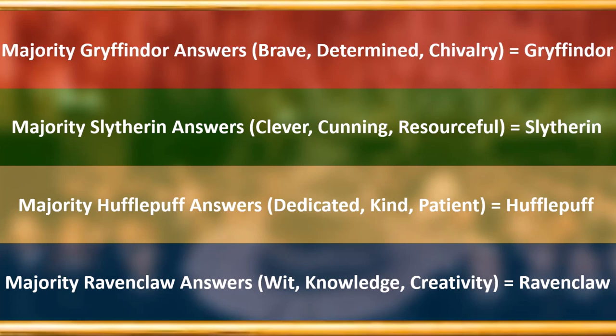So how does the sorting hat work here? If the majority of answers are brave, determined, chivalry — that equals Gryffindor. If majority Slytherin answers — clever, cunning, resourceful — that equals Slytherin. If majority Hufflepuff answers — dedicated, kind, patient — that equals Hufflepuff. If majority Ravenclaw answers — wit, knowledge, creativity — that equals Ravenclaw.